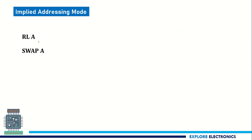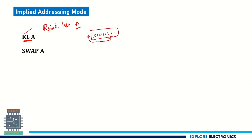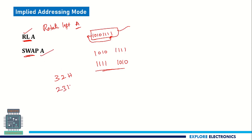Then we have implied addressing mode. In implied addressing mode, we have a single operand — like RLA. RL is the opcode corresponding to rotate left. Suppose the content of the accumulator is 1010 1111 — it is going to rotate this to the left, taking the leftmost bit and placing it at the right. That is how rotation works. Similarly, SWAP A means if the accumulator content is 1010 1111, it is going to swap 1010 with 1111. After the SWAP instruction is executed, 1111 comes first and 1010 comes after. So if you have 32H in the accumulator, after SWAP A it becomes 23H — nibble-to-nibble swapping is done.